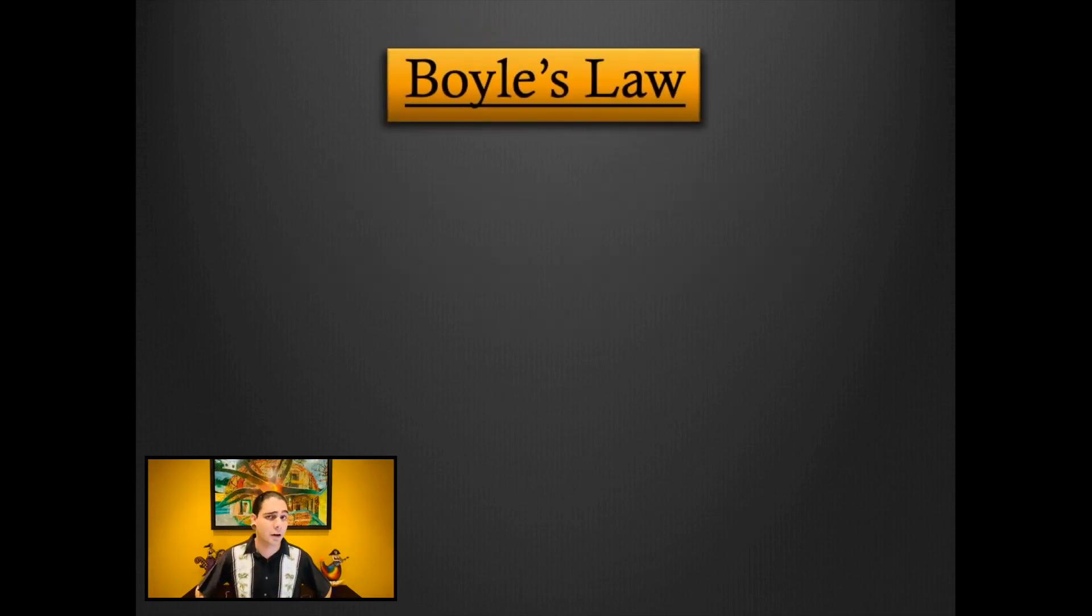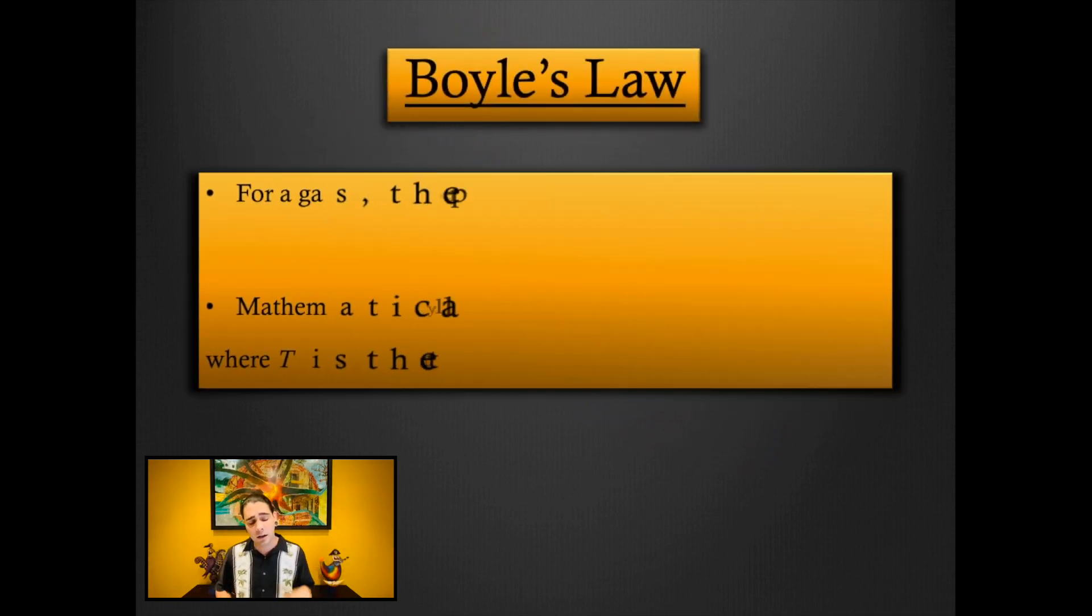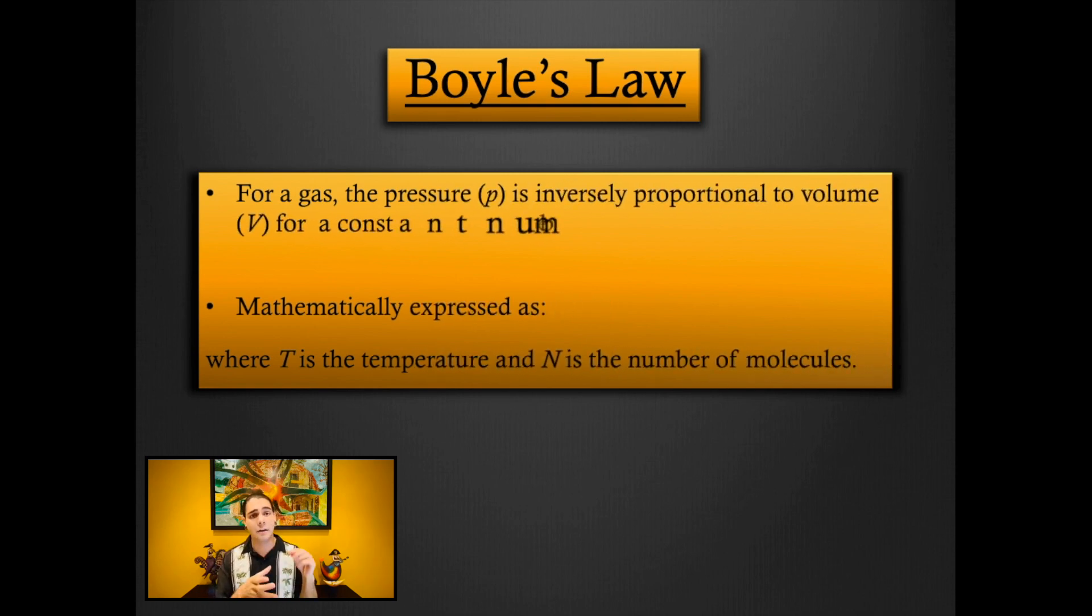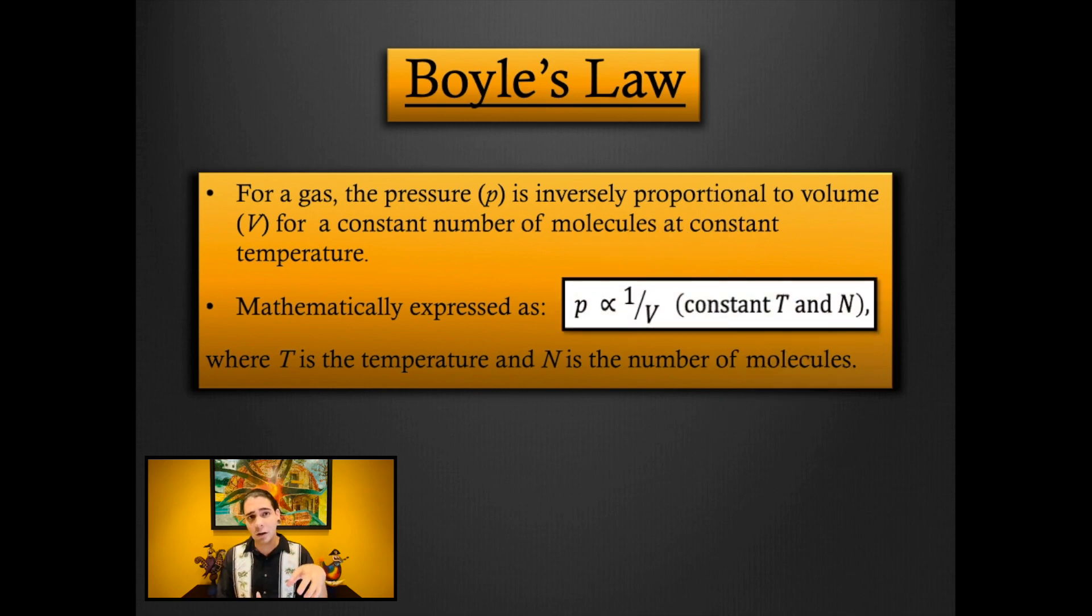So the first thing that we're going to talk about is called Boyle's law. Let's say I have a container that's filled with gas and I fix the number of molecules that are inside it, meaning I keep the jar sealed, but I keep the temperature also constant so it's in thermal equilibrium with its surroundings. If I adjust the pressure and measure its volume, I would realize that the pressure is inversely proportional to its volume. That means that the pressure of the gas is equal to some number divided by its volume.